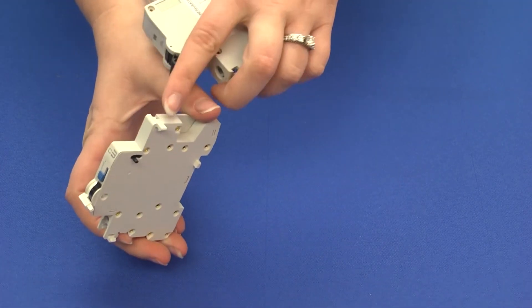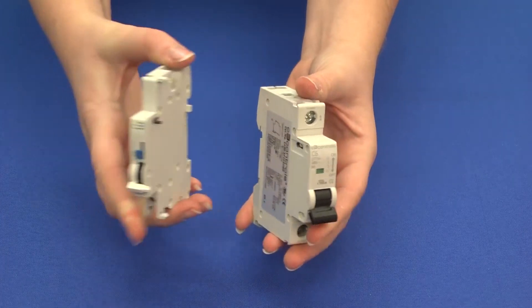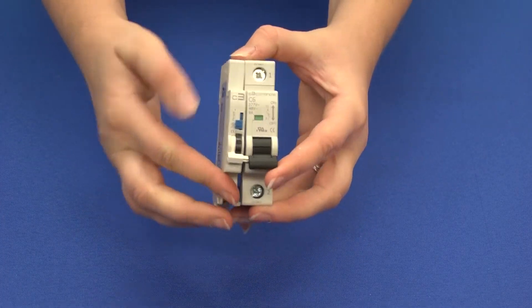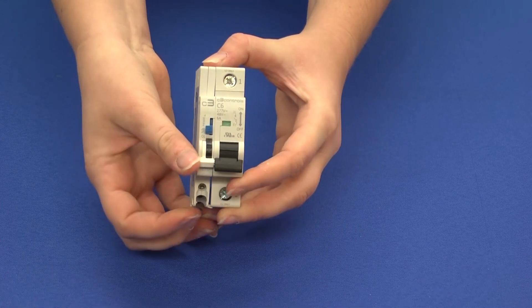Second, hook this top hook into the notch on the top of your MCB. Next, align the white bar inside of the black operating handle.